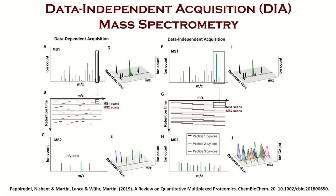On the other hand, in data-independent acquisition, also called DIA for short, all peptides within a defined mass range are subjected to fragmentation. This analysis is repeated over the full mass-to-charge range. DIA-MS continuously collects fragment ion intensities for all eluting peptides by using wider isolation windows such as 10 Daltons.